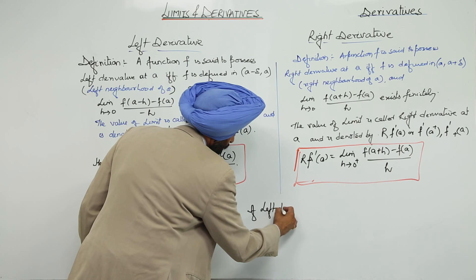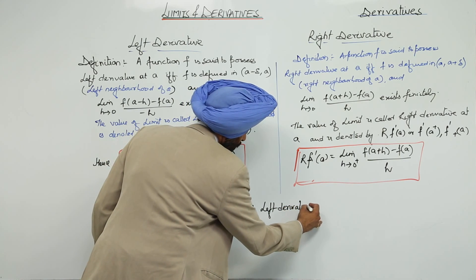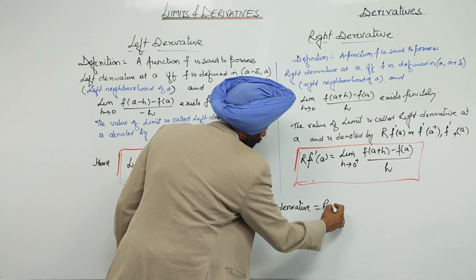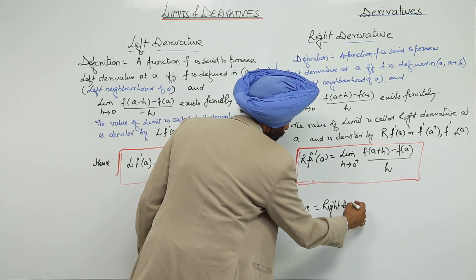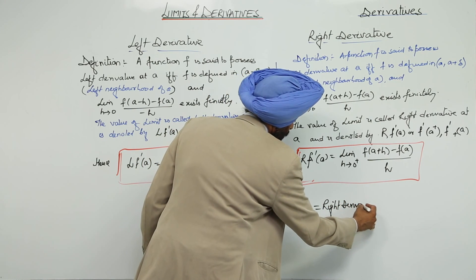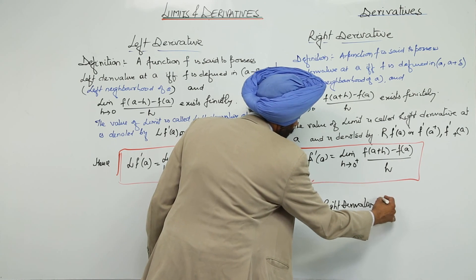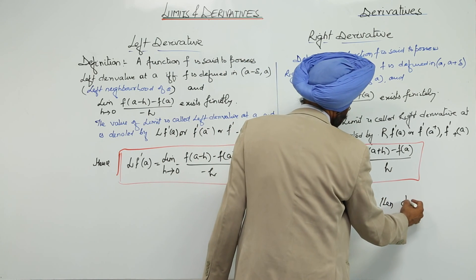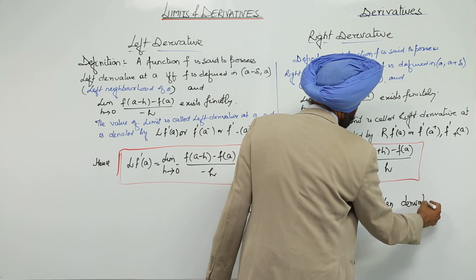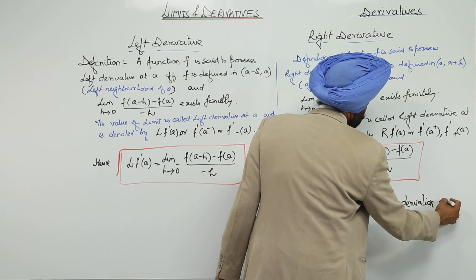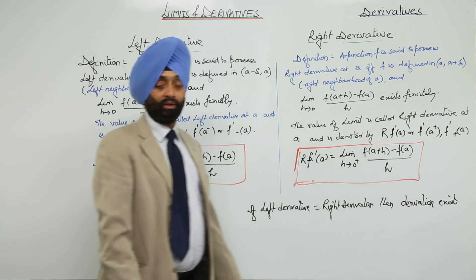The main point is: if the left derivative is equal to the right derivative, then the derivative exists and we can differentiate the function at that point.